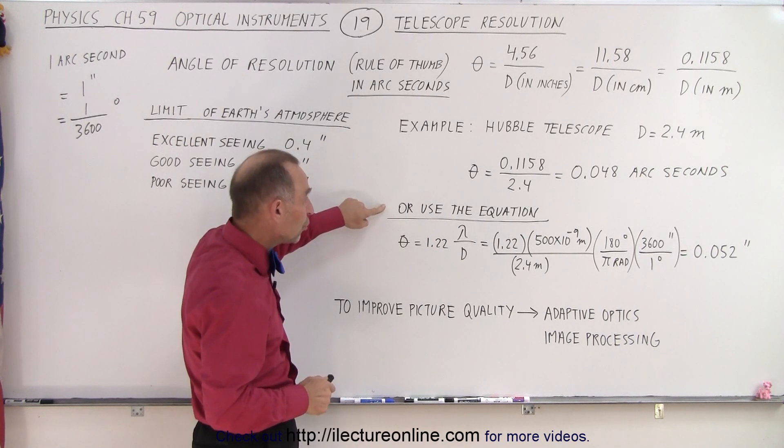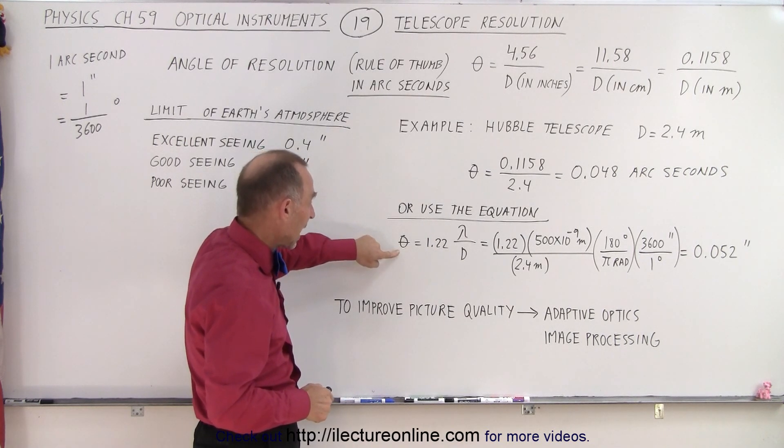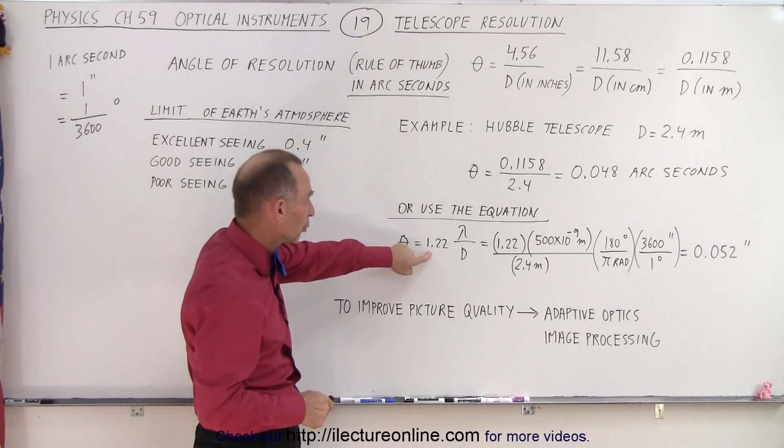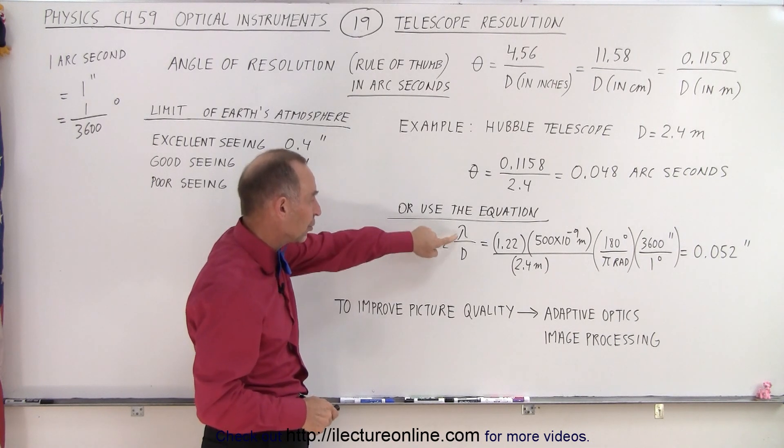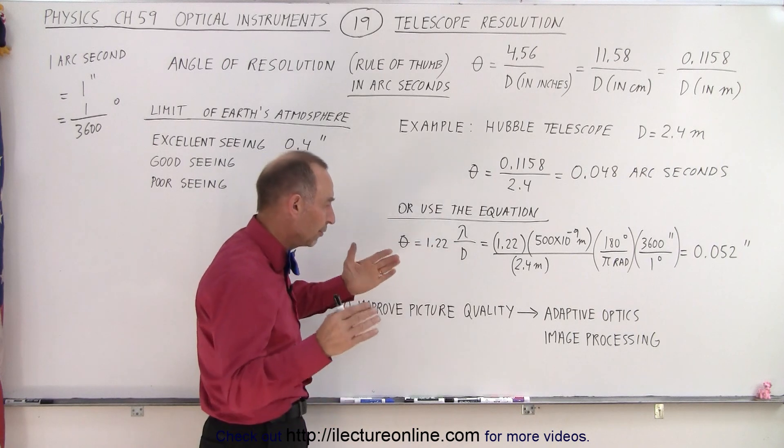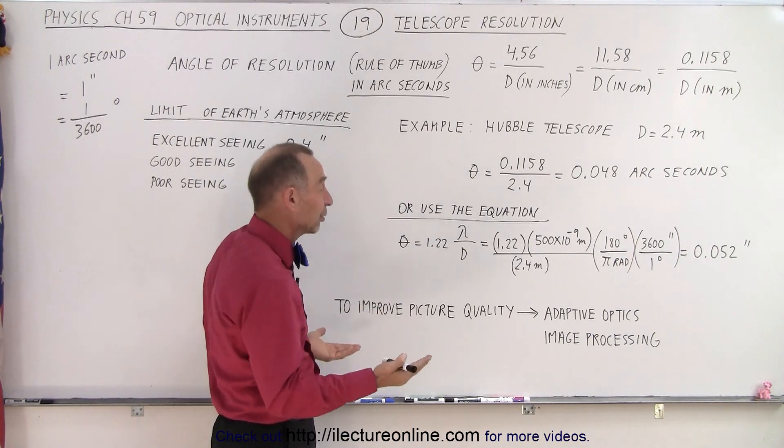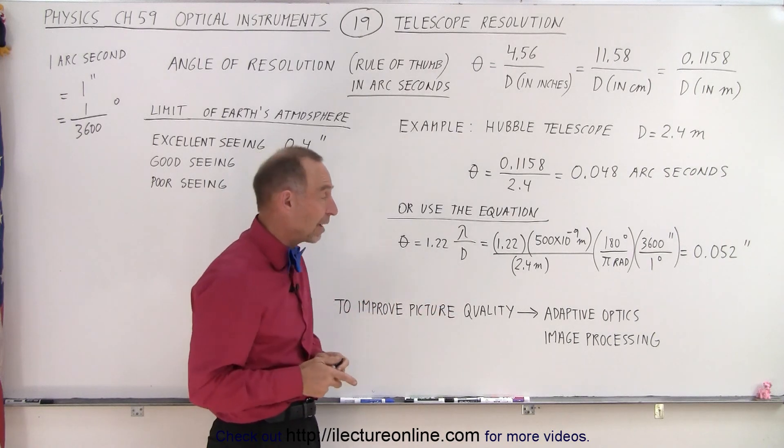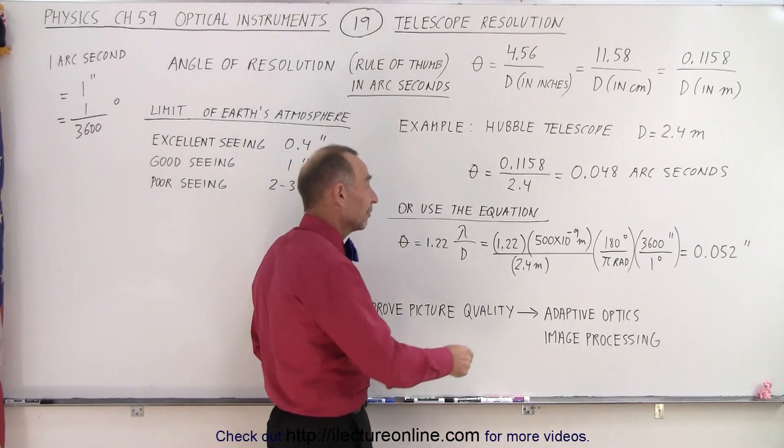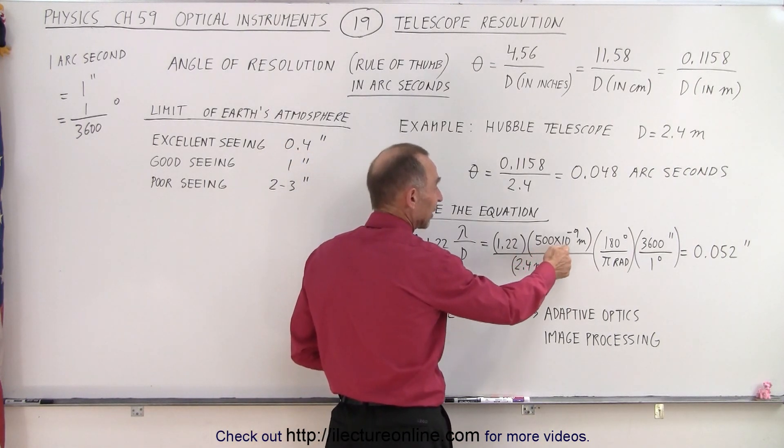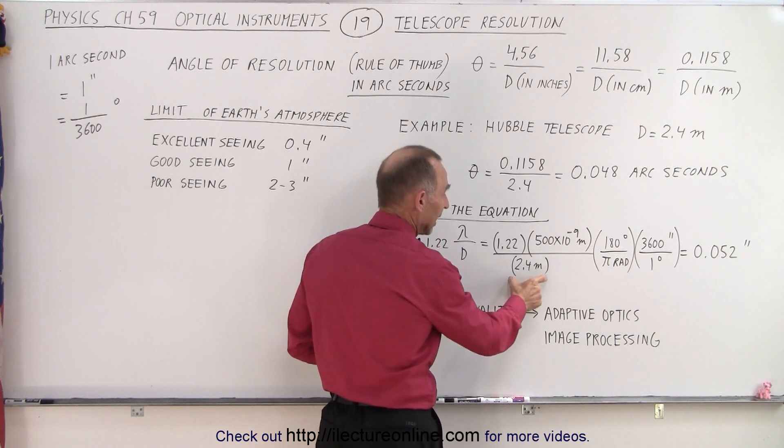We can, of course, also use the equation that the angle of resolution is equal to 1.22 times the wavelength of the light used divided by the diameter of the objective lens. Now, of course, what wavelength do we use? Because we see all kinds of different wavelengths. For a typical wavelength of 500 nanometers, 500 times 10 to the minus 9 meters, and using the Hubble Space Telescope again, notice we first get the result in radians, then we convert from radians to degrees, then we convert from degrees to arc seconds.